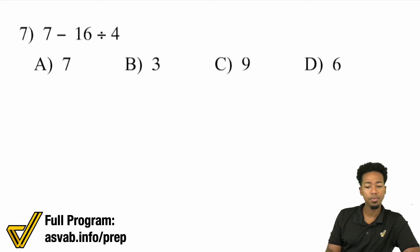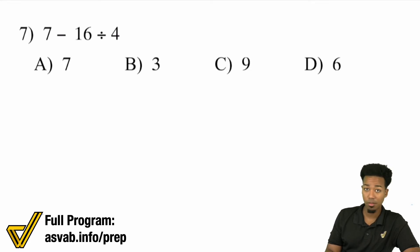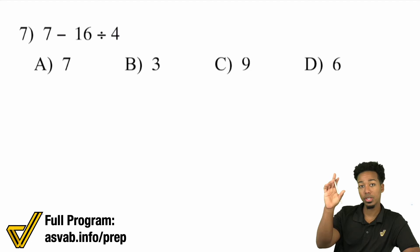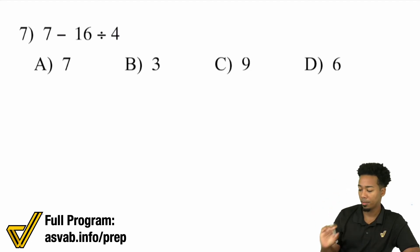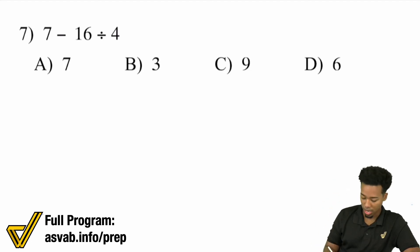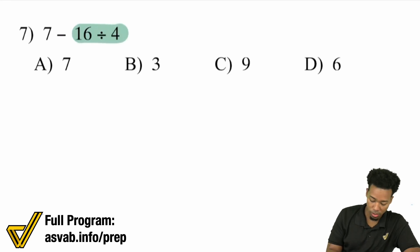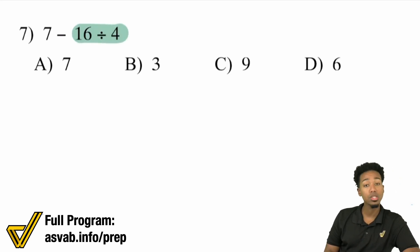Number 7: 7 minus 16 divided by 4. Be careful here — we're not going to do 7 minus 16 first. Remember: parentheses, exponent, then multiplication and division, then addition and subtraction. Here I notice that we have division, so we'll do 16 divided by 4 first.